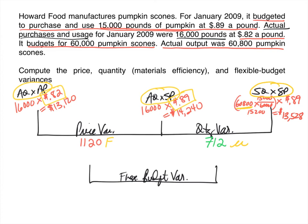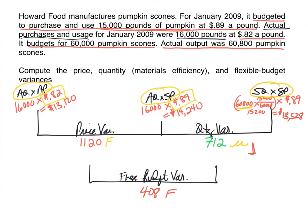There are two ways to get the flexible budget variance. One: sum the price and quantity variances. Since one is favorable and one is unfavorable, we take the difference — $1,120 − $712 = $408 favorable, carrying the sign of the larger number. Two: take the difference between pegs one and three directly — $13,528 − $13,120 = $408 favorable, since actual cost was less than the budgeted cost. Either method works perfectly fine.